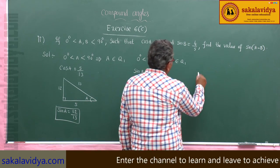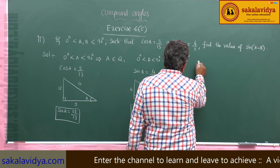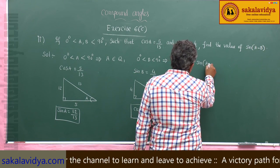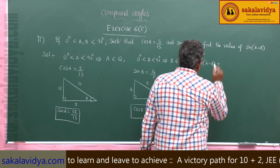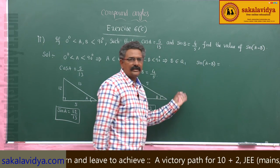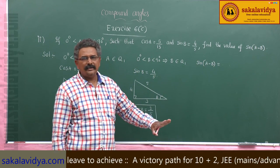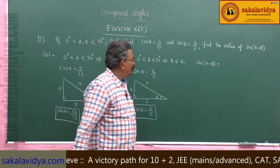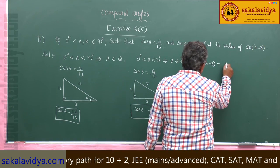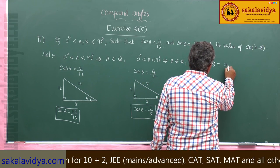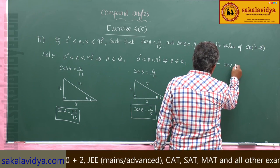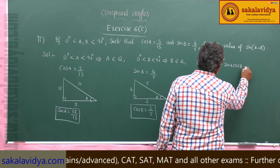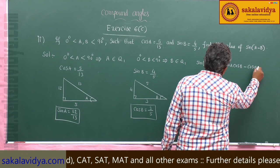Now we have to find sin of a minus b. The expansion formula for sin of a minus b is: sin a cos b minus cos a sin b.